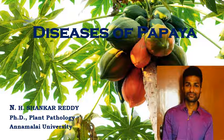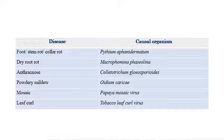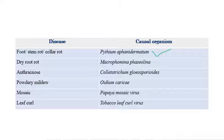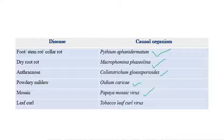We will now see the list of important diseases in papaya. My name is Ennit Shankar Reddy and I am doing a PhD in Plant Pathology at Acharya N.G. Ranga University. The important diseases in papaya are: foot rot or stem rot or collar rot caused by Pythium aphanidermatum, dry root rot caused by Macrophomina phaseolina, anthracnose caused by Colletotrichum gloeosporioides, powdery mildew caused by Erysiphe caricae, mosaic caused by Papaya mosaic virus, and leaf curl caused by Tobacco leaf curl virus.